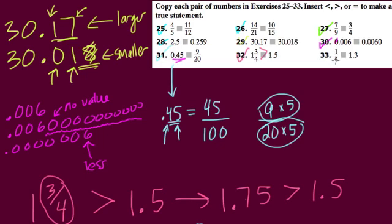Last one, we have 1 fourth versus 1.3. Well, 1.3 is greater than 1 fourth. Why? Well, because 1 fourth is less than 1, and this is larger than 1. This is 1 and 3 tenths, like $1.30 versus a quarter. All right. I hope this helped.